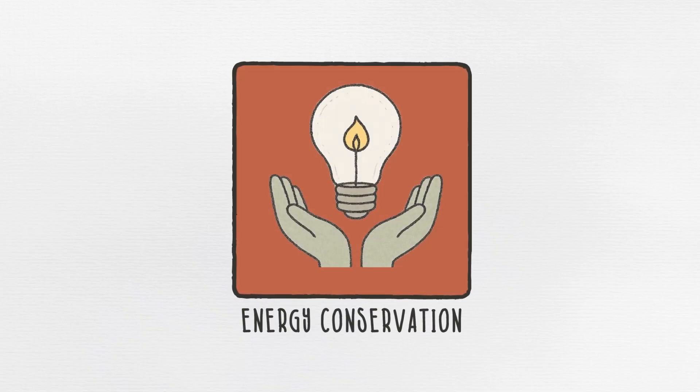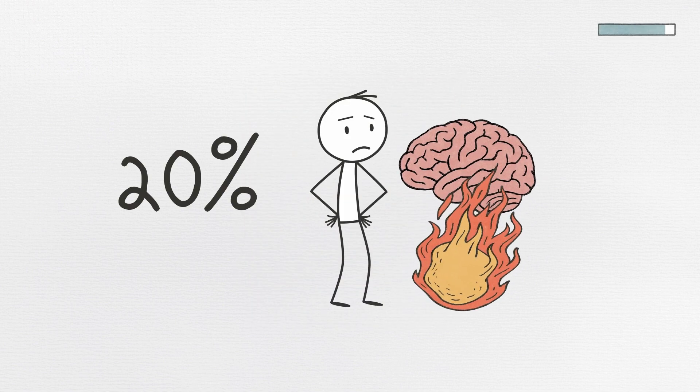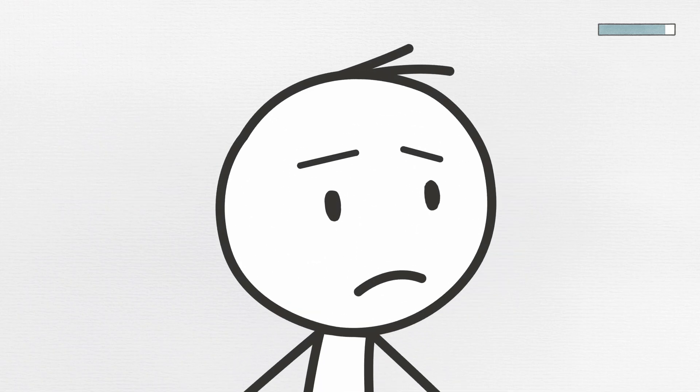Number two, energy conservation. The brain burns through about 20% of your daily energy, despite being only 2% of your body weight. It's like having a tiny supercomputer that's constantly draining your battery.